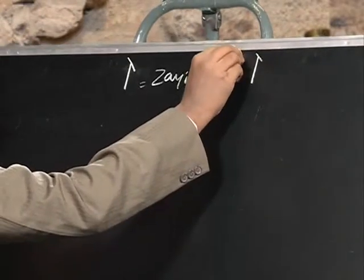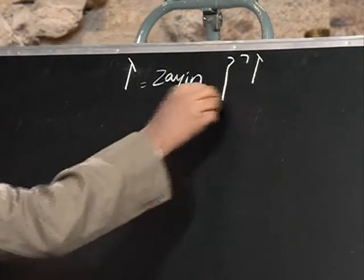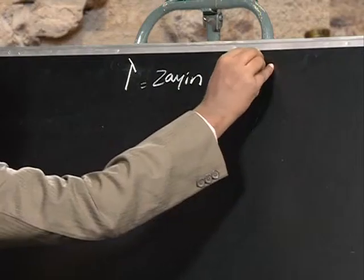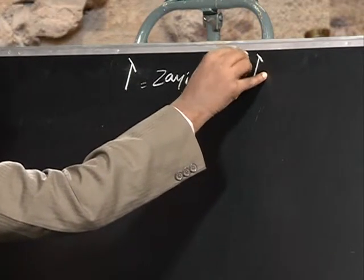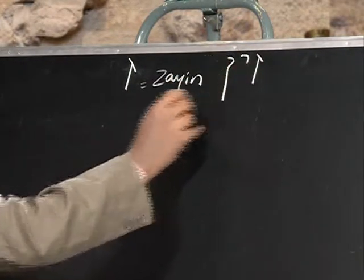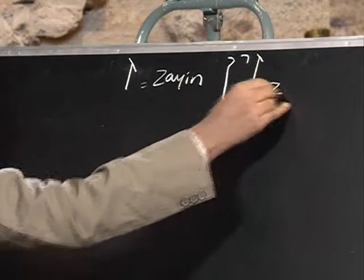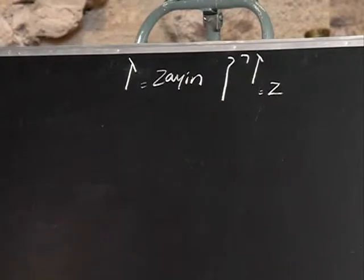Thank you for your lovely messages, your feedbacks, and your suggestions for this program. We are reviewing Zayin, Yod, and the final form of Nun. Zayin, which means in English we say it is Z. Aur inglesi bhasha mein is ka arth hai Z. We have been learning about Zayin for the past 2-3 weeks.